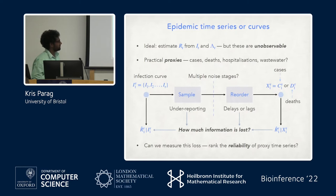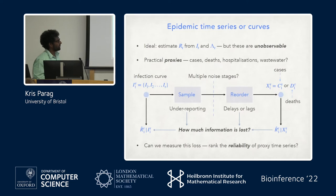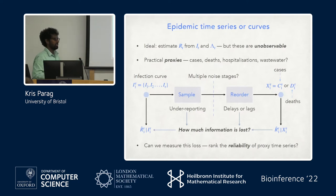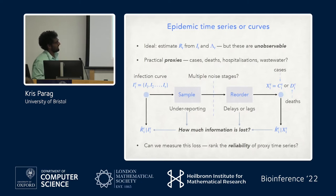What actually happens when we get these proxies is that we have some under-reporting of infections, which can be treated as a sampling process, and a bunch of delays or lags on those infections, which reorder how we see infections. I'll look at cases, denoted c, and deaths, denoted d, and ask how we compare these two and get some notion of reliability.